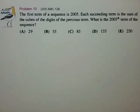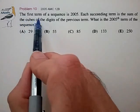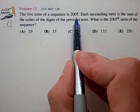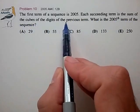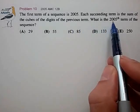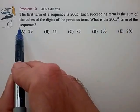Hi, in this video we'll look at an example AMC problem of examining a sequence to look for patterns. So let's see what we have. The first term of a sequence is 2005. Each succeeding term is the sum of the cubes of the digits of the previous term. What is the 2005th term of the sequence?